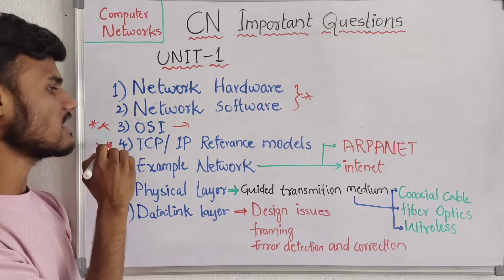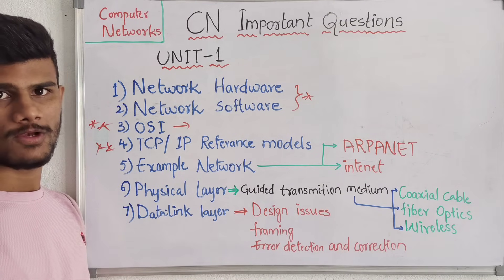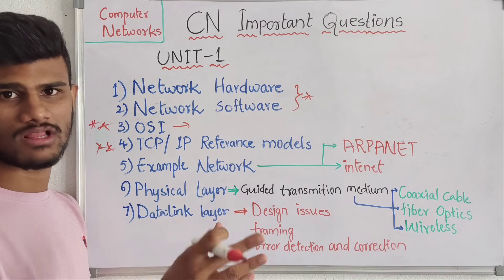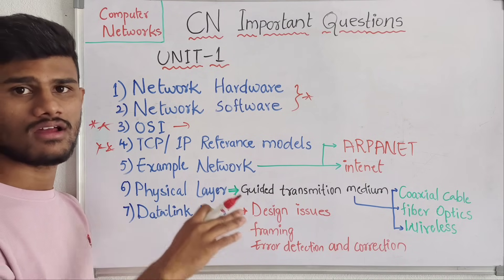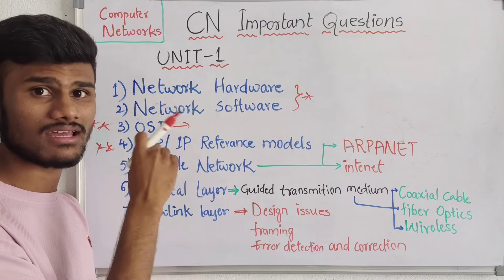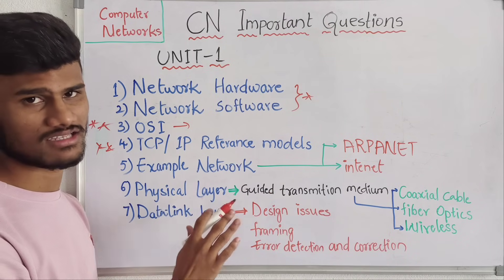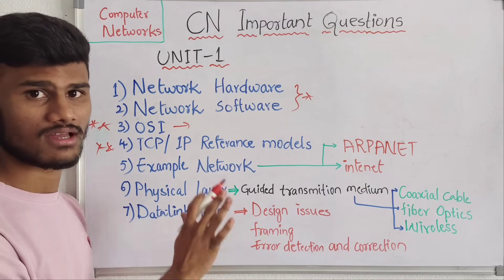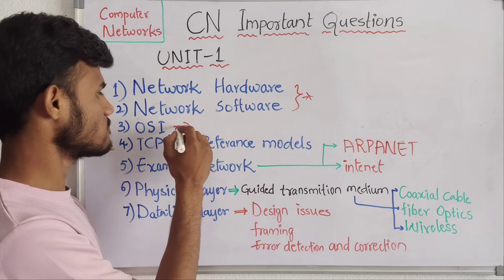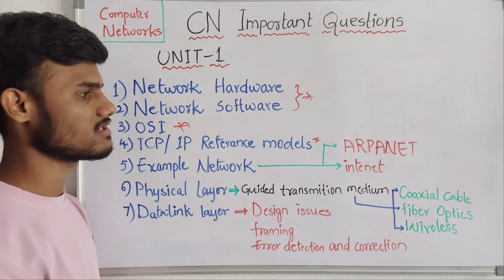Next we have the TCP and IP reference models — four layers. And the protocols. This is also an important and easiest topic. These both, OSI model and TCP/IP, are very very easy topics.